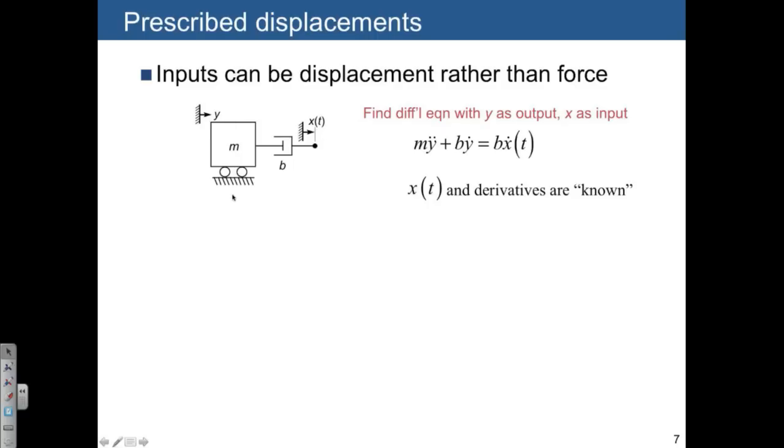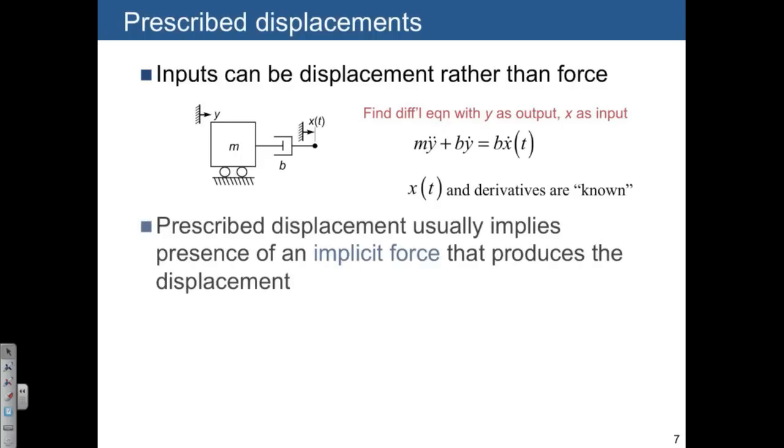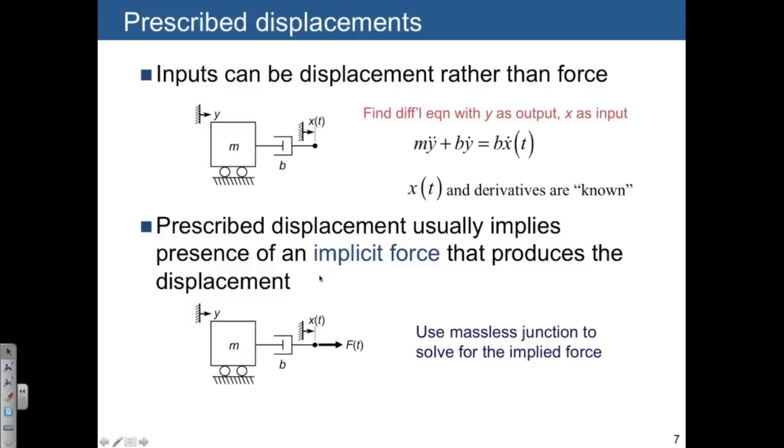What we don't show you often is the force that's needed in order to produce that motion. But even though it's not shown, that force is indeed necessary, and we often call that an implicit force that's associated with the motion. That's a capital F that isn't necessarily shown to you in the original formulation of the problem, but it is indeed necessary.